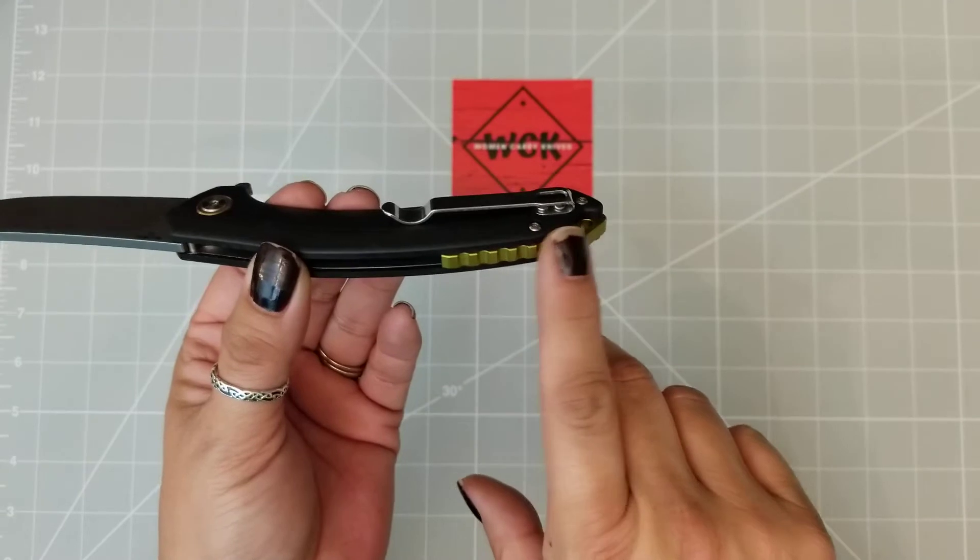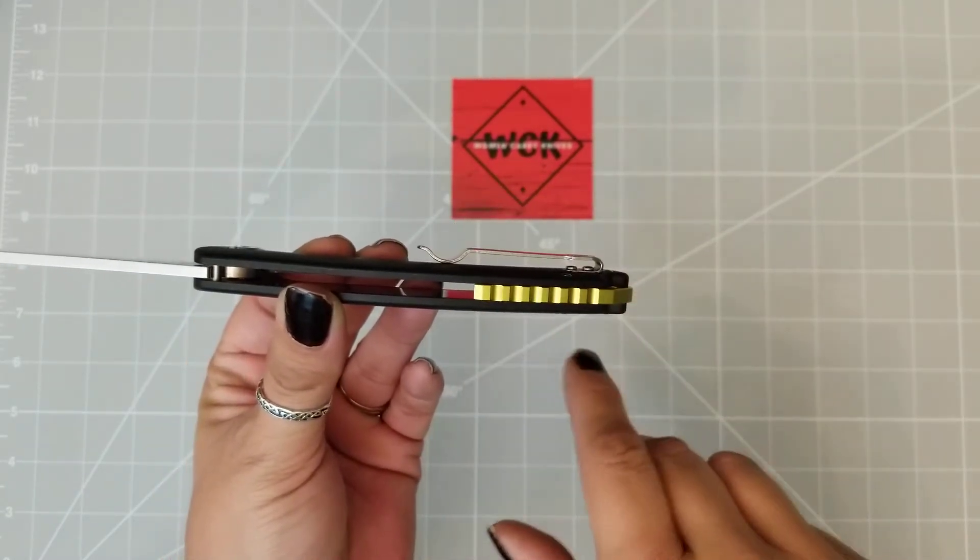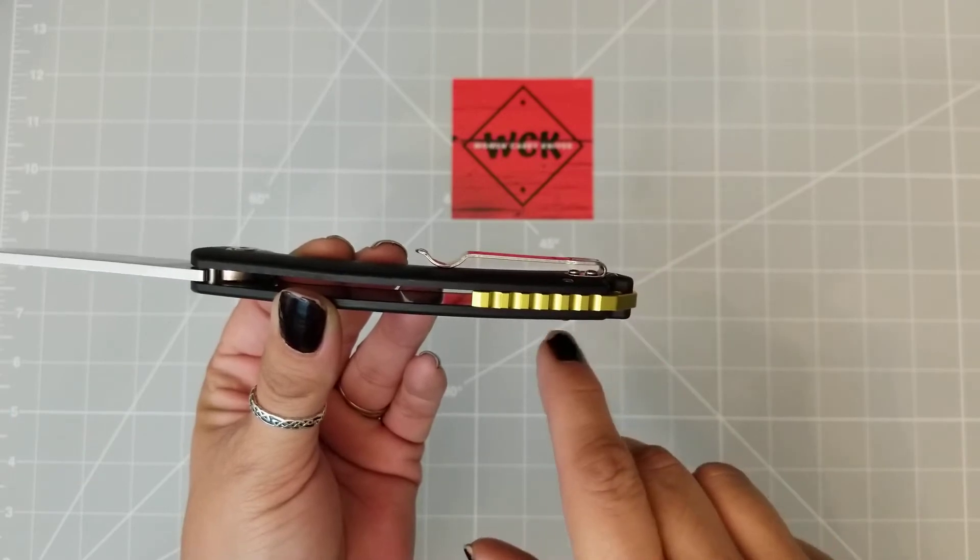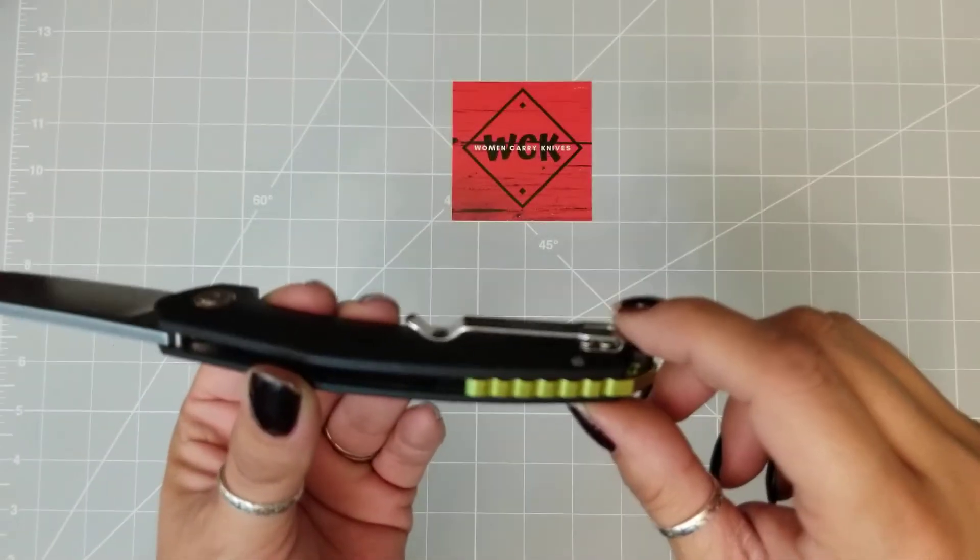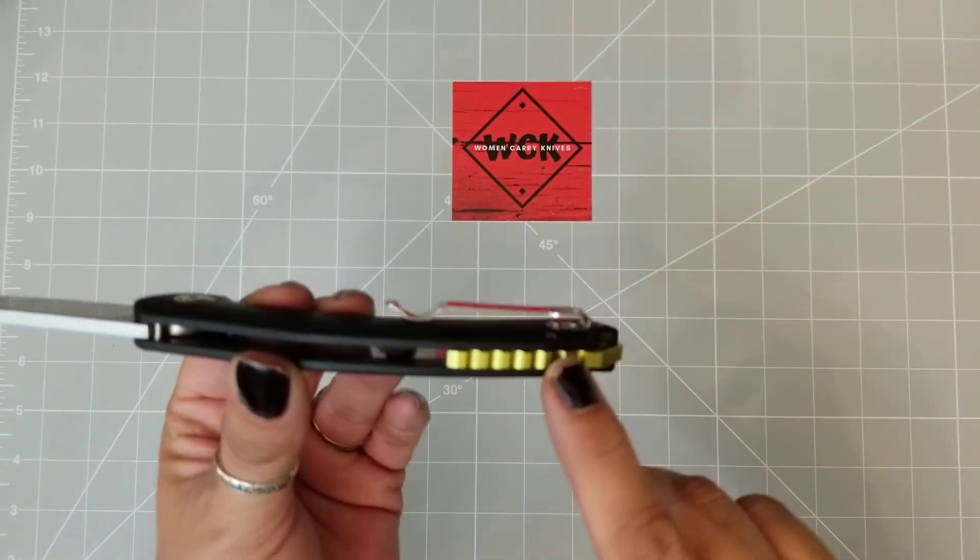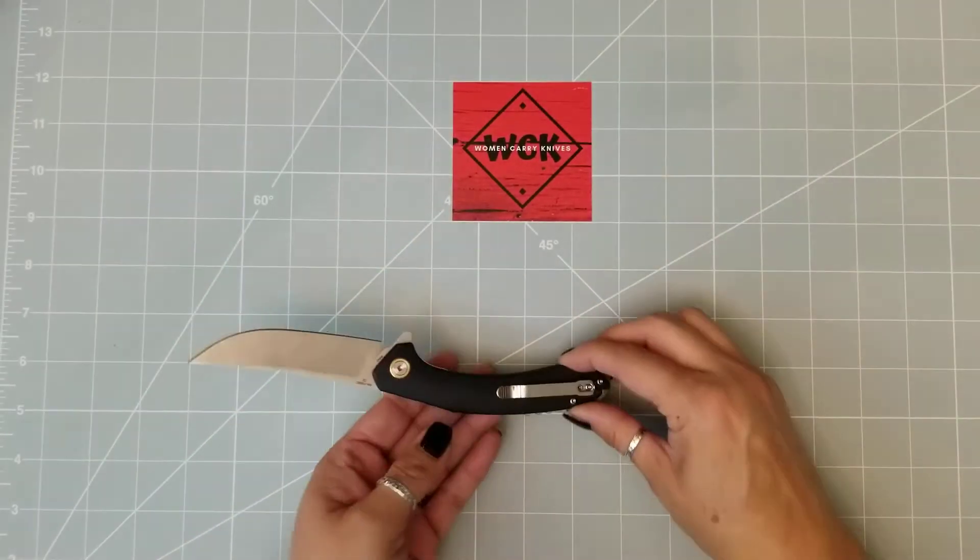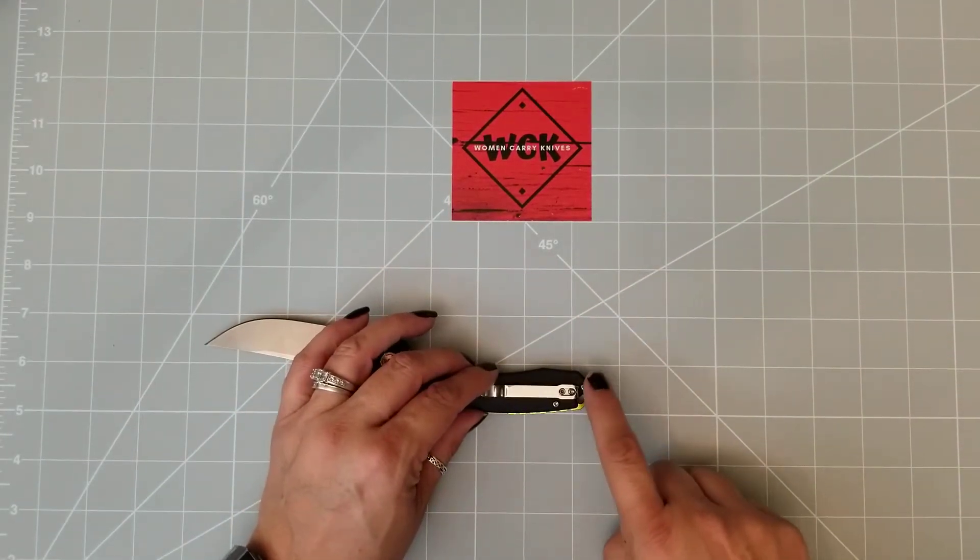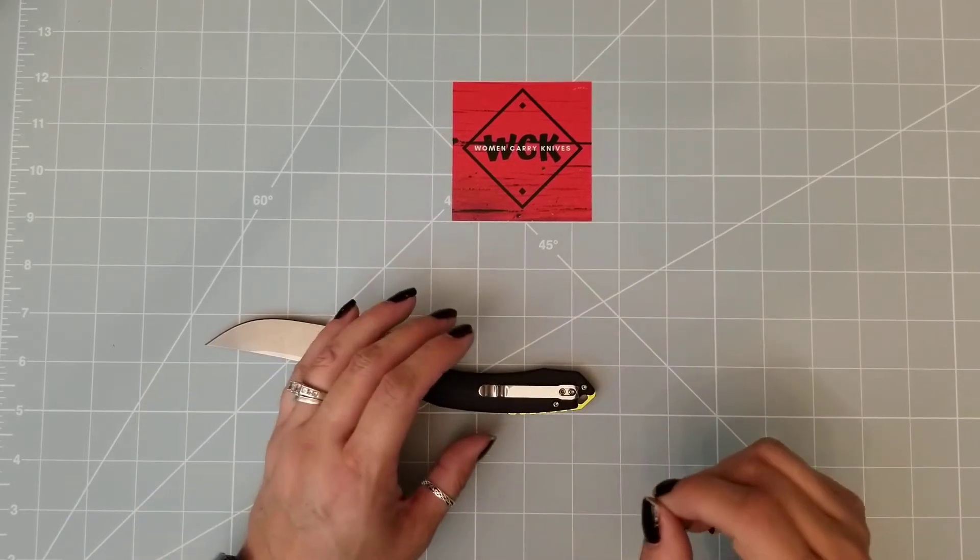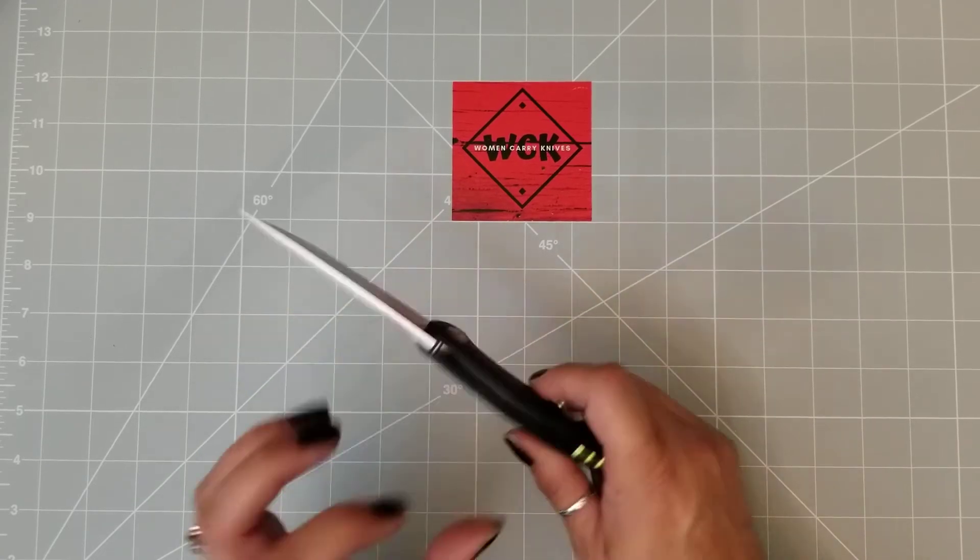We're trying to find out if that was titanium or just aluminum backspacer, we're not actually sure. It does have a deep carry pocket clip. It is going to stick out about, if you put that down, you're still going to be having maybe about almost a half inch sticking out of your pocket. So although it is deep carry, it is not riding extremely low in the pocket.